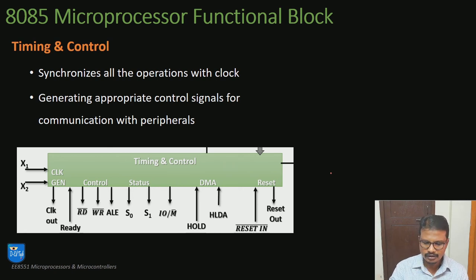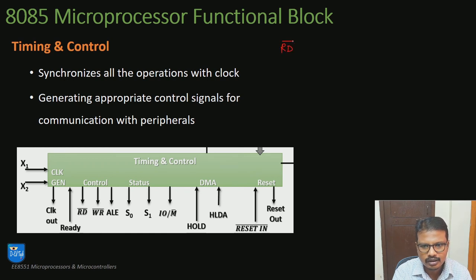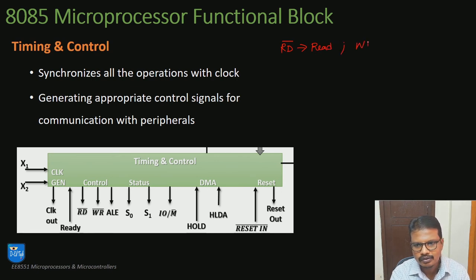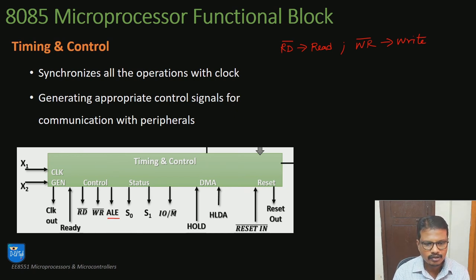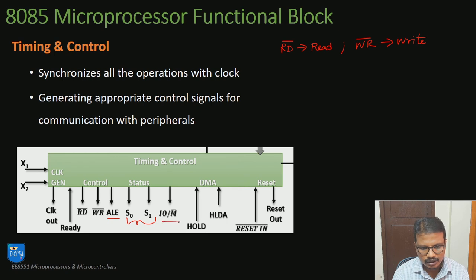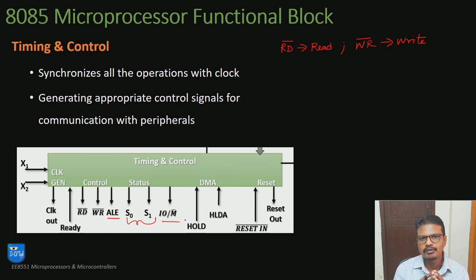Let us take a close look at the timing and control block diagram. We have a control signal called RD complement, which is responsible for giving the read signal to memory. Next is WR complement, which generates a write control signal to the memory device. We also have ALE, which is helpful when reading the address location from the lower order address pin. Then we have status signals S0 and S1, which indicate the current state of operation of the microprocessor. The next pin is IO slash M complement — this input-output slash memory pin instructs the input-output or memory device about the mode of operation.